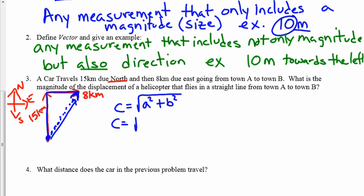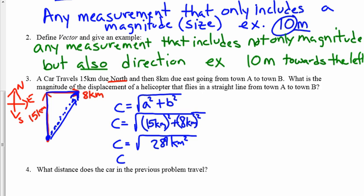So plugging in numbers here, and careful to include units, fifteen kilometers in parentheses squared plus eight kilometers, also in parentheses squared, gives me 289 kilometers squared. In this case, that displacement winds up being 17 kilometers.